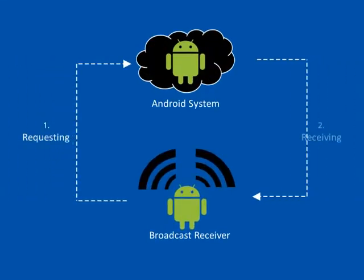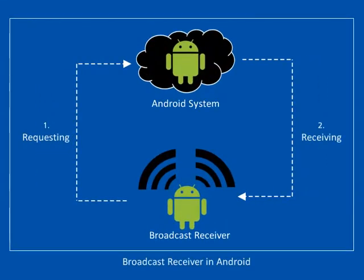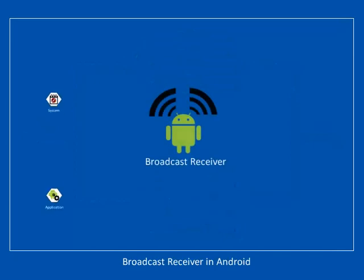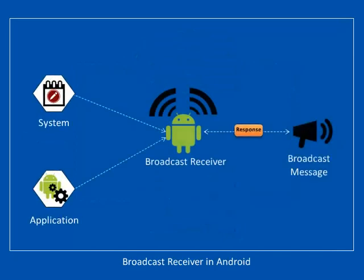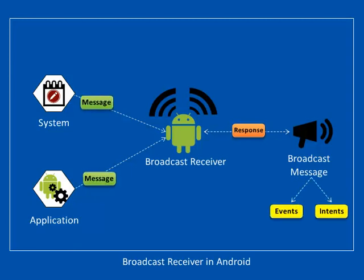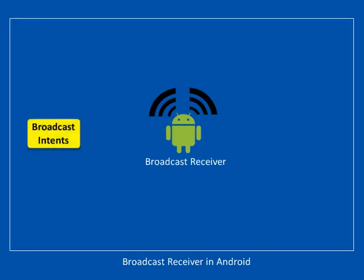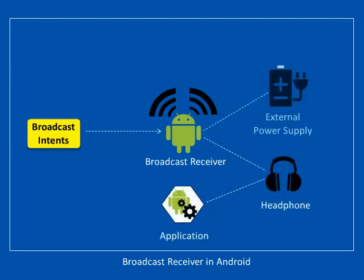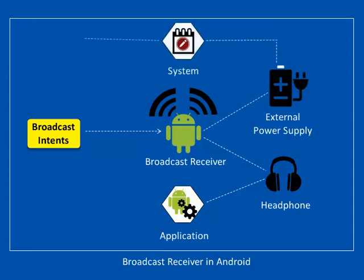Broadcast Receiver is an Android component which responds to broadcast messages from an application or system. These messages are sometimes called events or intents. Broadcast Receiver allows the application or system to register events or intents. Broadcast Intents are intent objects that are used by the Android system to notify applications about key system events, such as the external power supply or headphone being connected or disconnected.